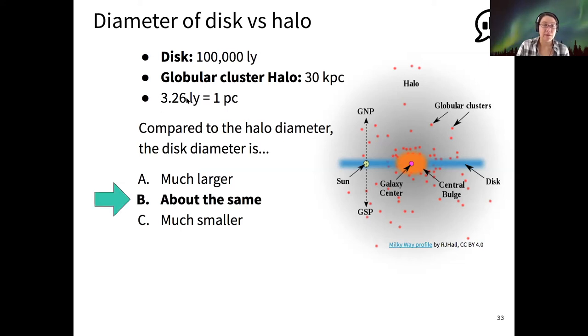The reason for that is that if I take 3.26 light years times 30 kiloparsecs, then I get, I guess, nine and three quarters times a thousand, that's what the kilo prefix means. So that's 97,000 light years. So that's about the same as 100,000 light years. So it seems like Shapley did a pretty good job in 1917 of figuring out the exact size of the Milky Way using those globular clusters, which I think is pretty remarkable.